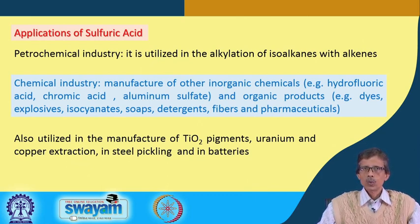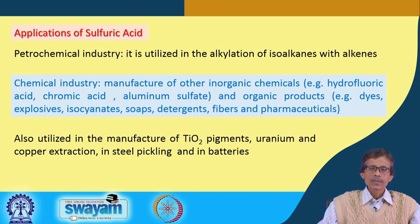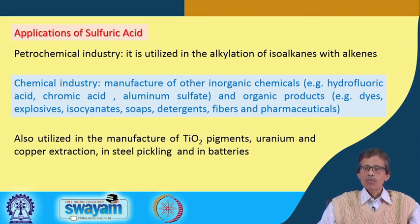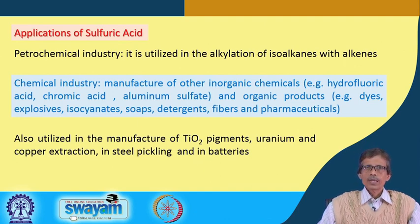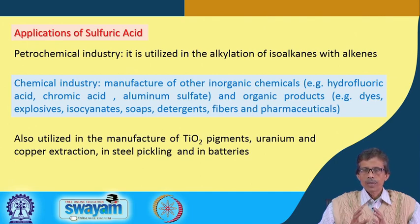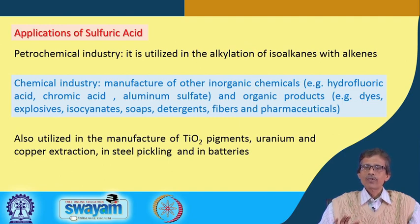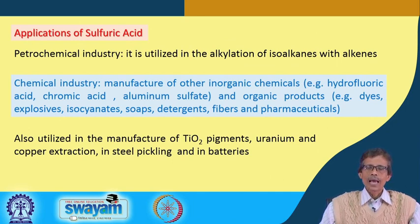The petrochemical industry is a very important consumer. It uses concentrated sulfuric acid for the alkylation of isoalkenes with alkenes. Concentrated sulfuric acid is an excellent dehydrating agent, and the corresponding isoalkenes — such as isopropane-type compounds — can be converted via condensation reactions with different alkenes to form alkylated products. This process is known as alkylation.